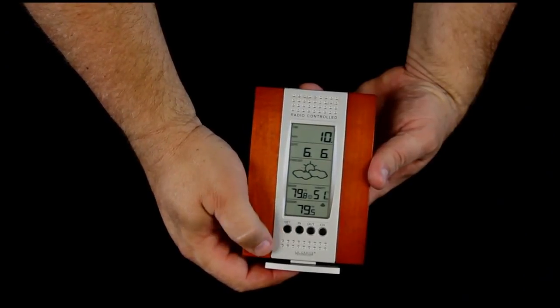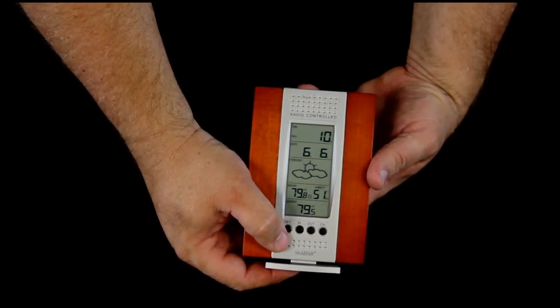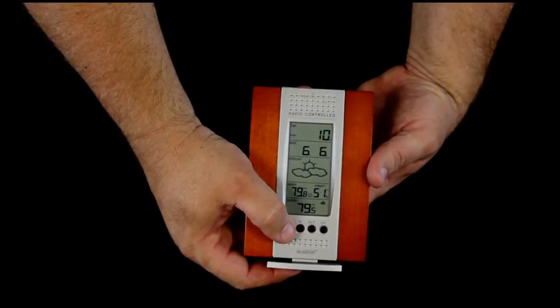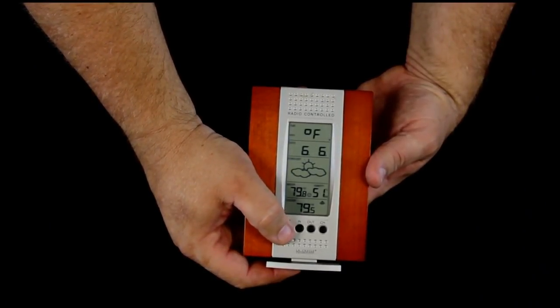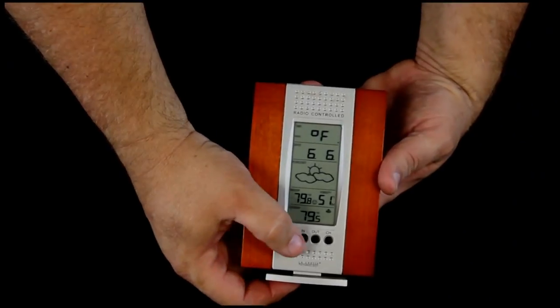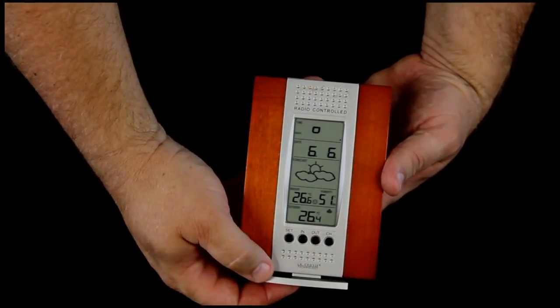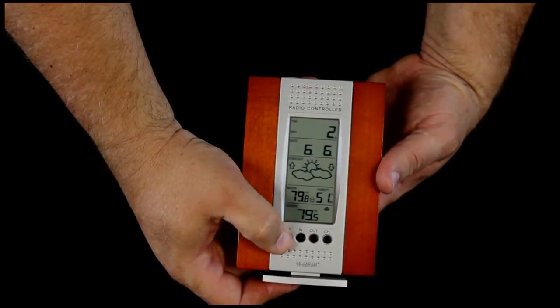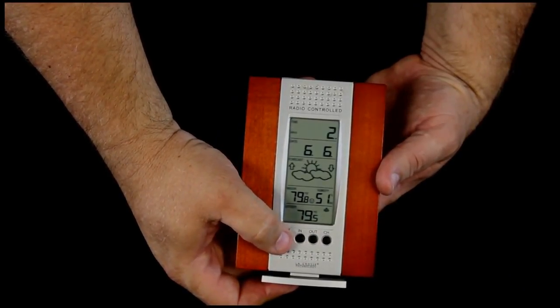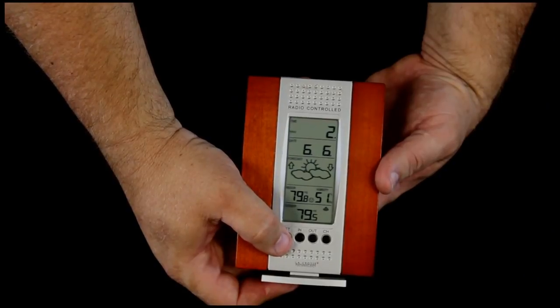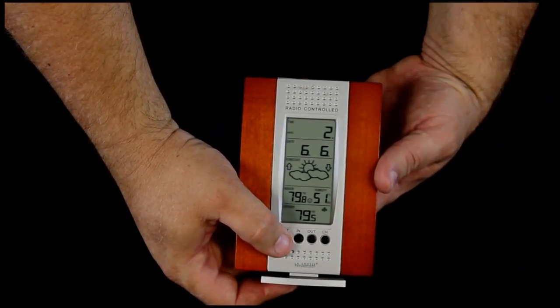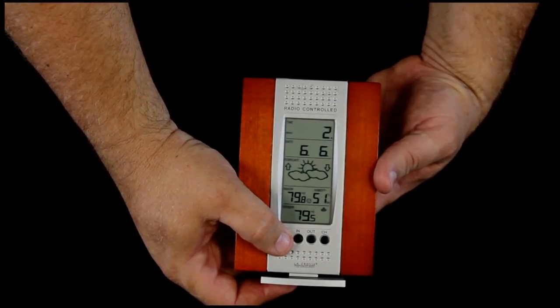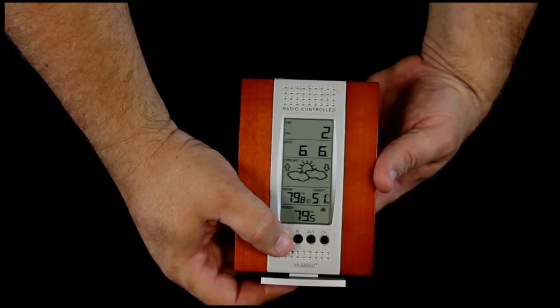Pressing set once again gives us a 10. That 10 is standard in the system and does not need to be changed. Pressing set one more time shows us we're in degrees Fahrenheit. Pressing the in button lets us take it to Celsius if we wish. We're going to take it back to Fahrenheit. Pressing set one more time shows us the forecast sensitivity. And for most applications, leaving that at 2 is correct. If you live in the mountains or on the coasts, your owner's manual will show you how to change that.